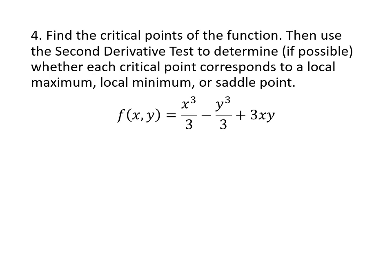Another problem, same process. We start by finding f sub x and f sub y. In this case f sub x is x squared plus 3y, and f sub y is going to be negative y squared plus 3x. And again we're going to set those both equal to zero.